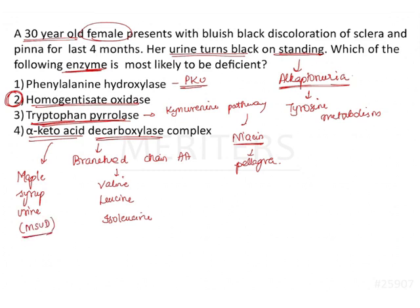In maple syrup urine disease you find a maple syrup odor in the urine, which is the typical finding. That involves the metabolic pathway of branched-chain amino acids. Therefore, in this clinical scenario we are talking about alkaptonuria, and the enzyme deficient is homogentisate oxidase — because of which the patient has bluish-black discoloration of the sclera and pinna, and urine turns black, all due to alkapton bodies. It is an autosomal recessive condition and patients typically manifest during the third and fourth decade, as in this 30-year-old female.